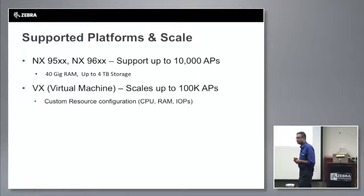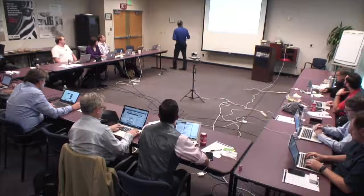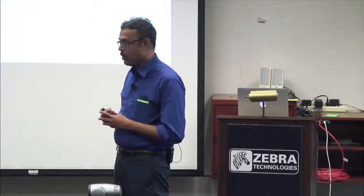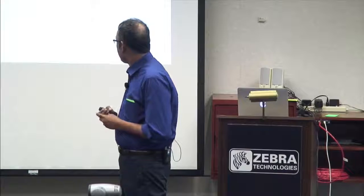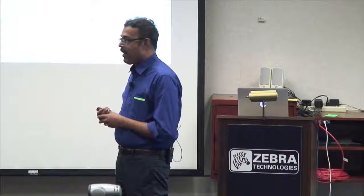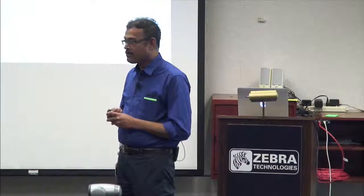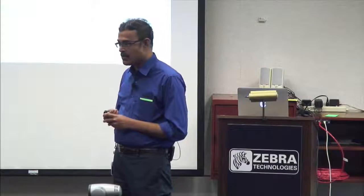For 100,000 access points, we're looking at approximately 24 to 32 core CPUs — two or three processors with that many cores — about 128 to 256 GB of RAM, and for every 10,000 APs you're looking at about 3,000 IOPS on storage.